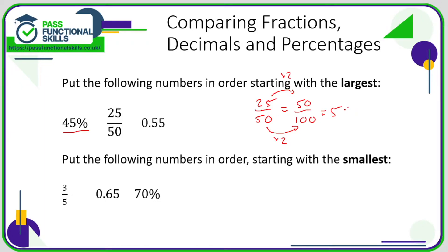So 25 out of 50 is the same as 50 out of 100, and that is 50 percent. So we've got 45 percent, 50 percent, and 0.55 is a decimal. Now to convert a decimal into a percentage, we just need to multiply by 100. And 0.55 times 100, or we just need to move the decimal point two positions, so 55.0, otherwise known as 55 percent.